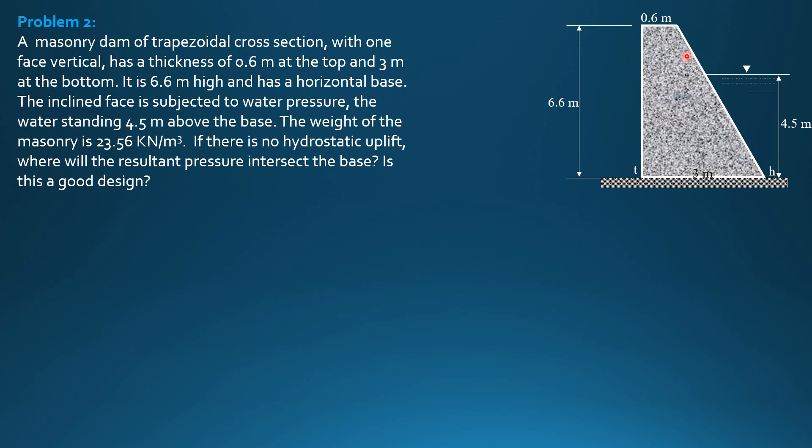This is the dam and we have here water standing on the inclined face of the dam. This is the heel and this is the toe. The depth of water on the inclined face is 4.5 meters. There is weight of water that is over this inclined face. We will divide it into this manner. We have FH still 1.5 meters from the bottom because the surface is below the crest of the dam.